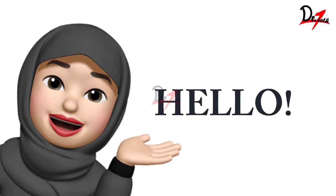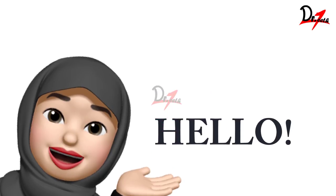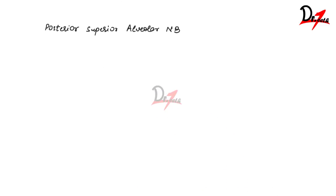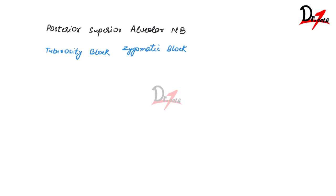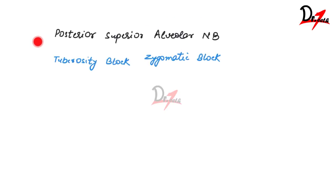Hello everyone, assalamu alaikum, welcome back to Dr. Teeth. Today we are going to learn about the posterior superior alveolar nerve block. This nerve block is also known as the tuberosity block and the zygomatic block, so you can have questions in examination on any of these names — they can ask you to explain the posterior superior alveolar nerve block, tuberosity block, or zygomatic block.